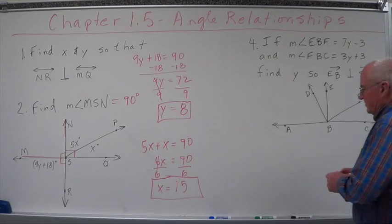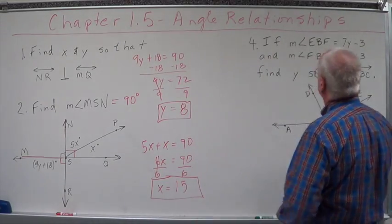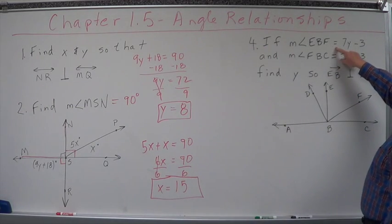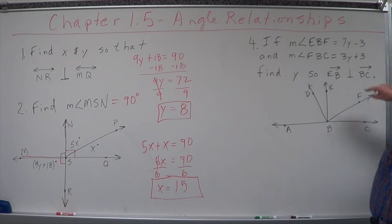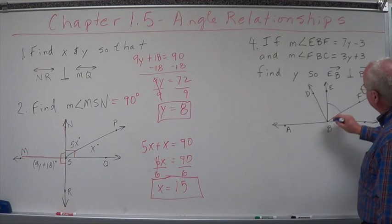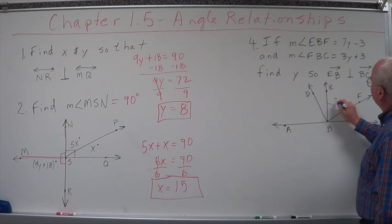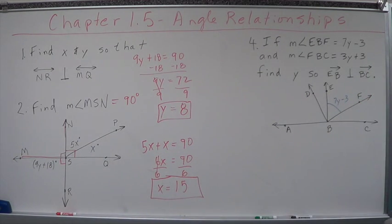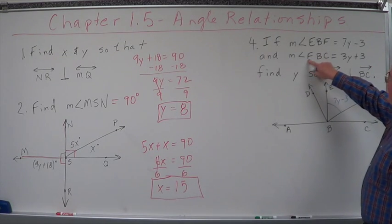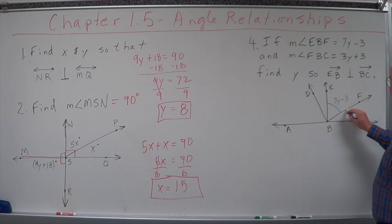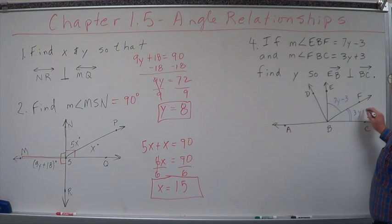Now let's come over here and do this problem — we'll use a different color ink so you know we're on another problem. If the measure of angle EBF equals 7y minus 3, EBF is right here, I'm going to write that right inside that angle. And the measure of angle FBC equals 3y plus 3, I'm going to mark that right here.